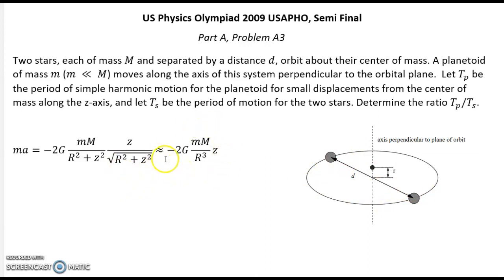Finally we have this good approximation. Now we can cancel small m and we have this expression. Acceleration equal negative two g big M over r cubed multiplied by displacement z.